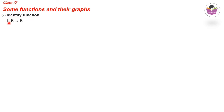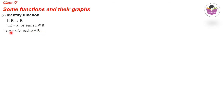Now let's discuss some functions and their graphs — this is a very important concept. The first one is the identity function. f from ℝ to ℝ is an identity function if f(x) = x for each x ∈ ℝ. We can write it as y = x for each x ∈ ℝ.